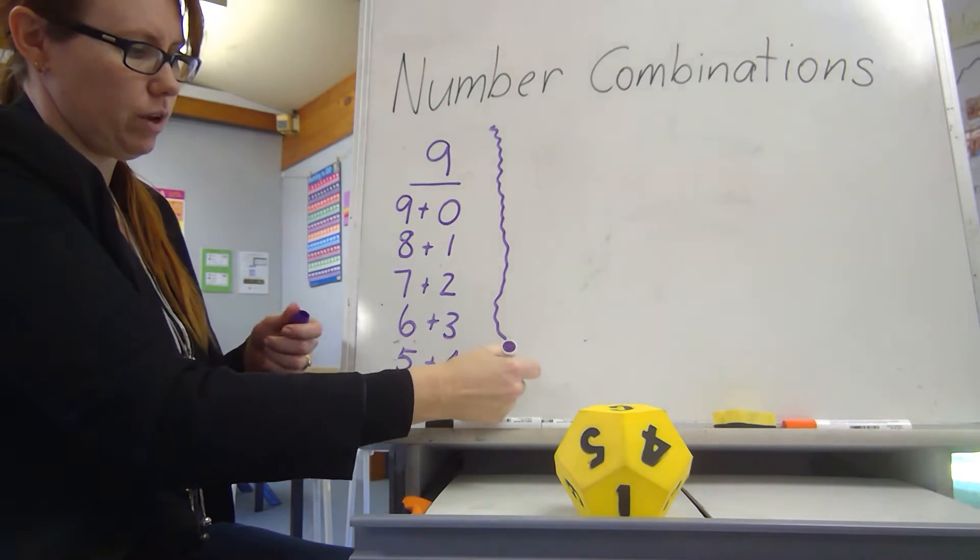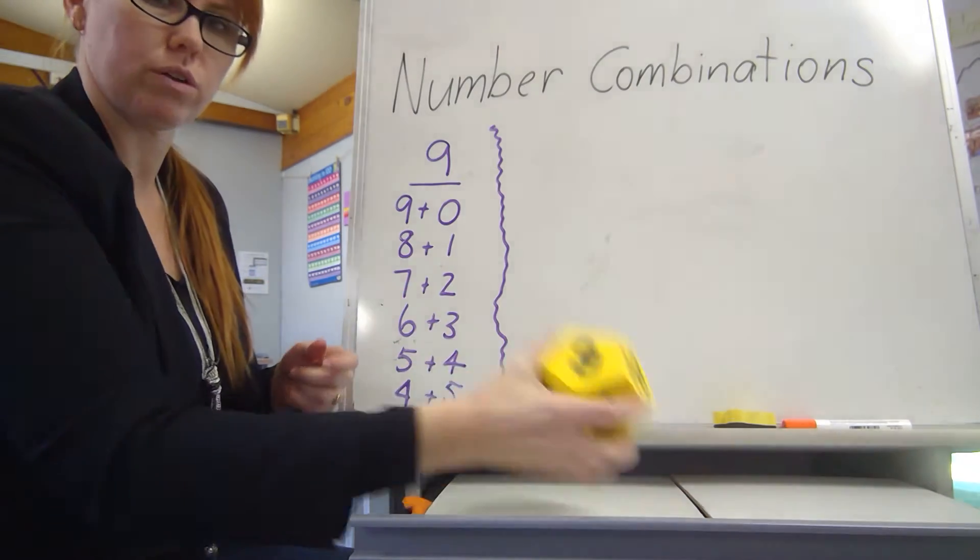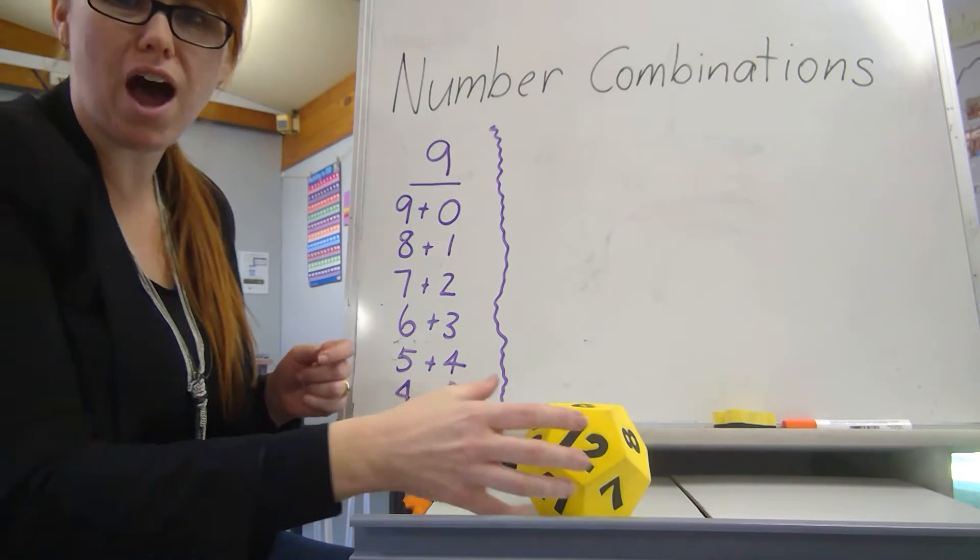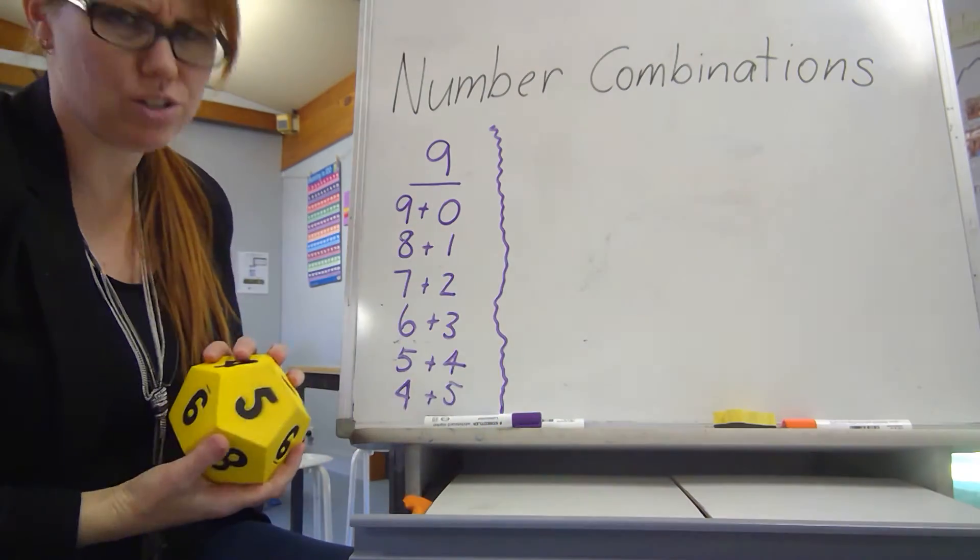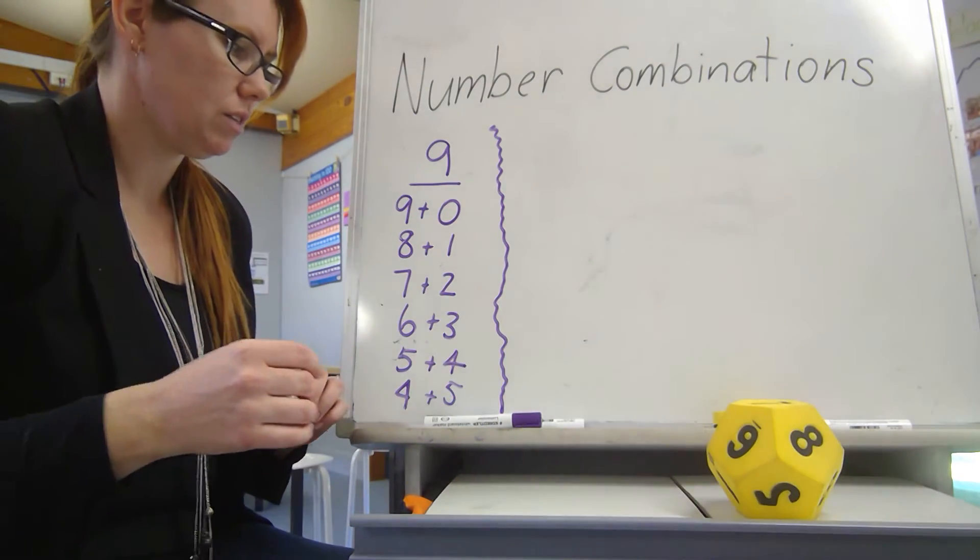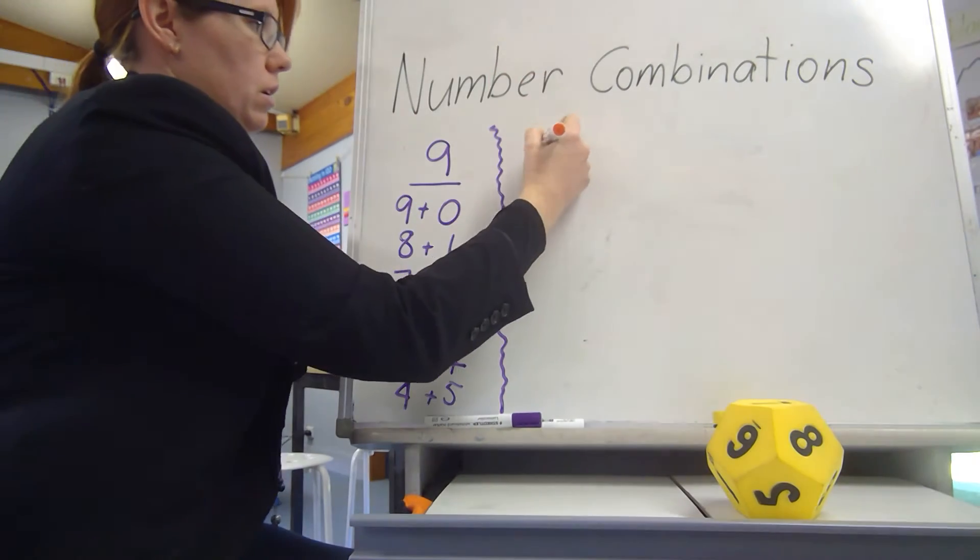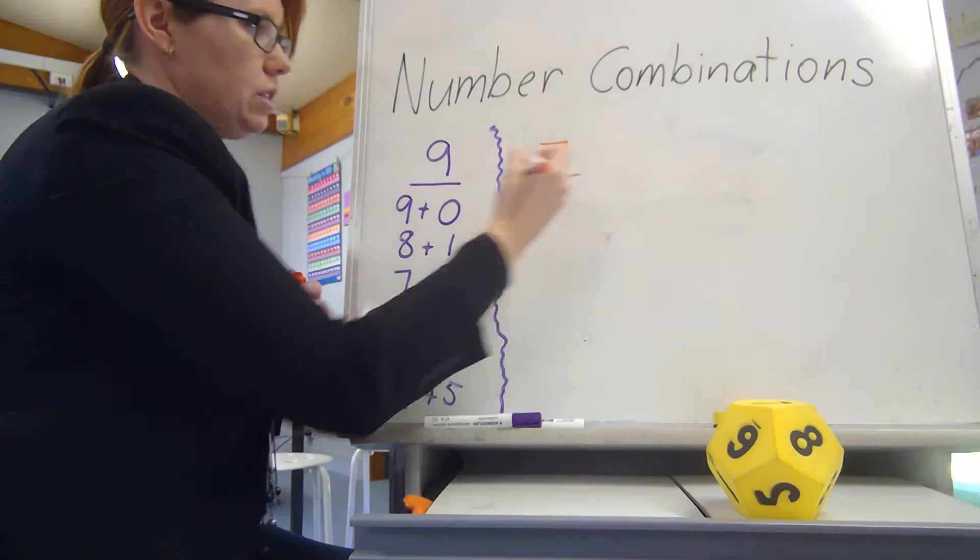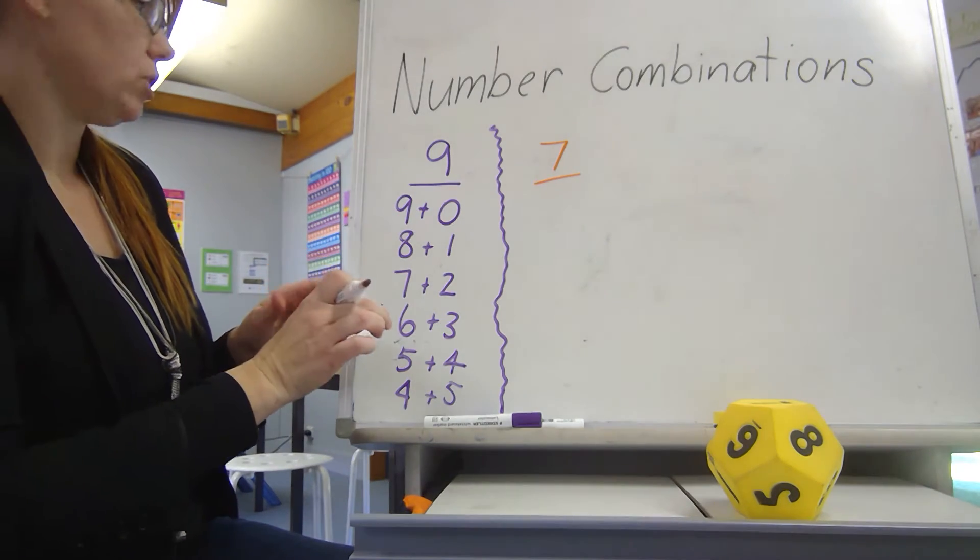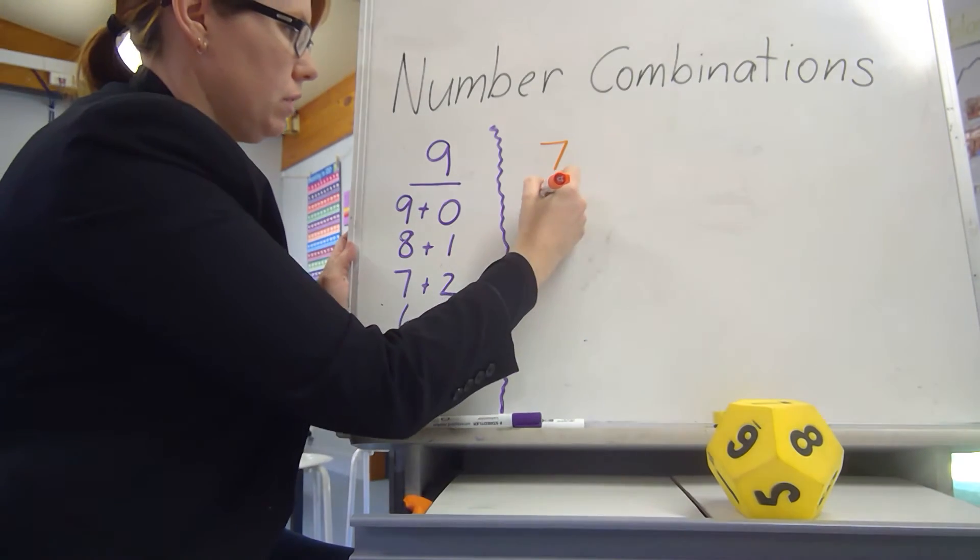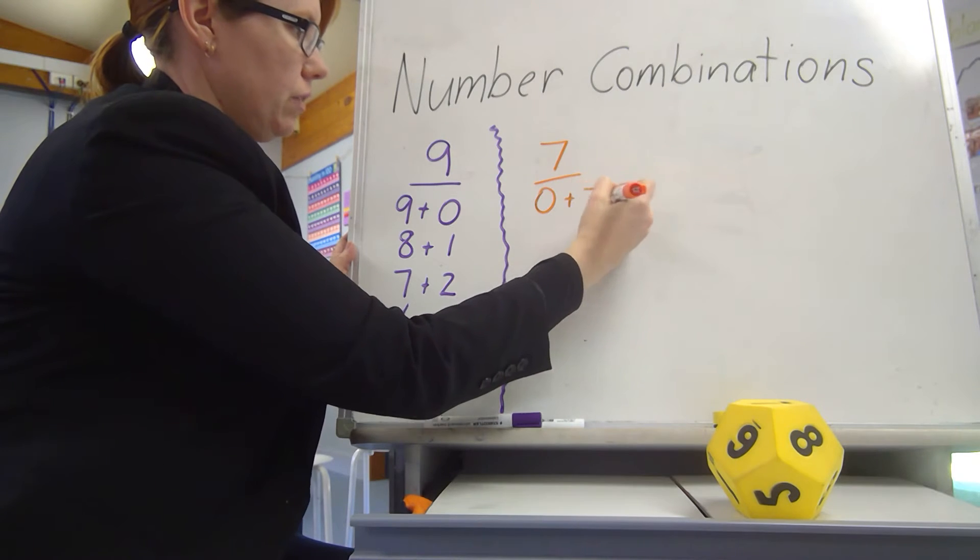Let's see if we can do it with a different number. I'm going to try rolling again. I rolled 9 again. I'm not going to do the same one again for you guys. 7. Now this time, I'm going to go the other way. 0 plus 7 equals 7.